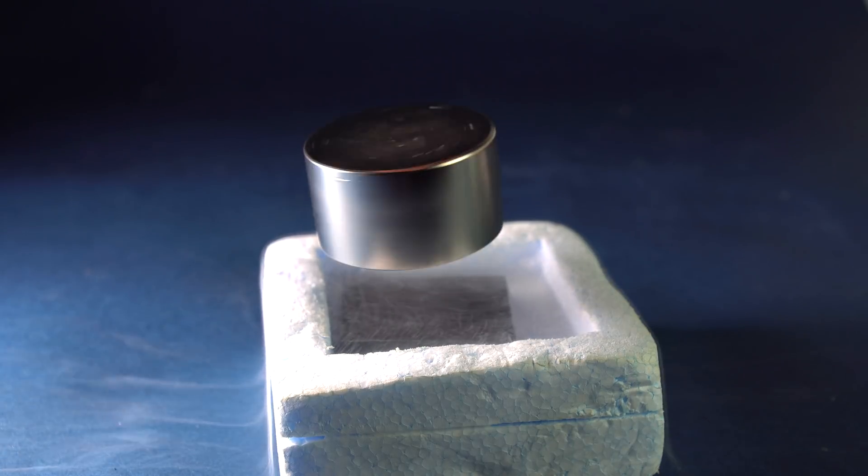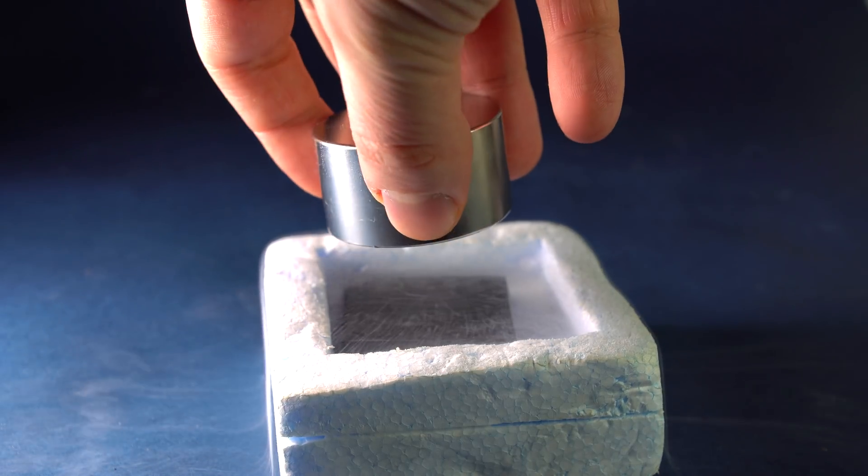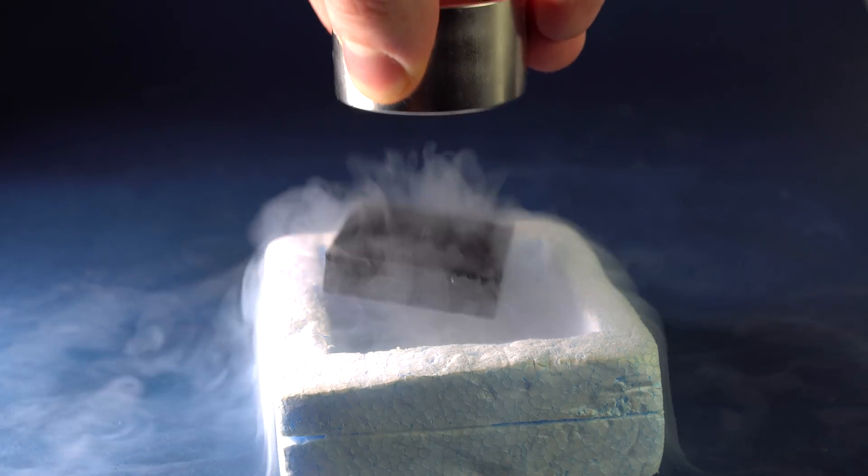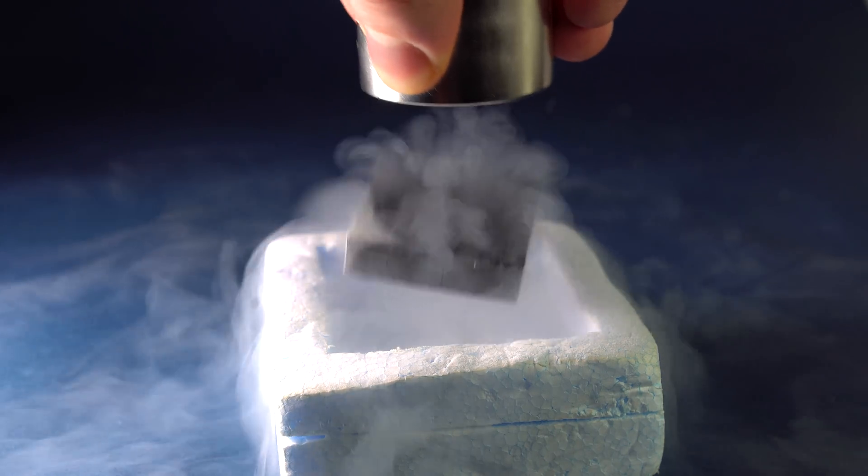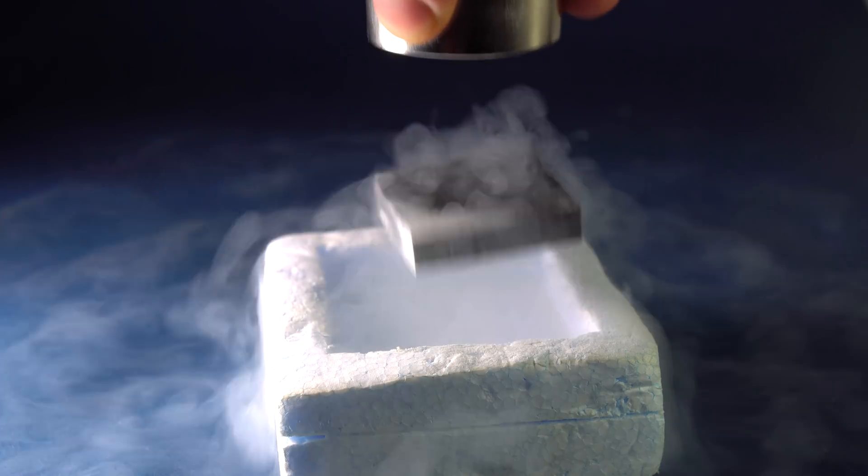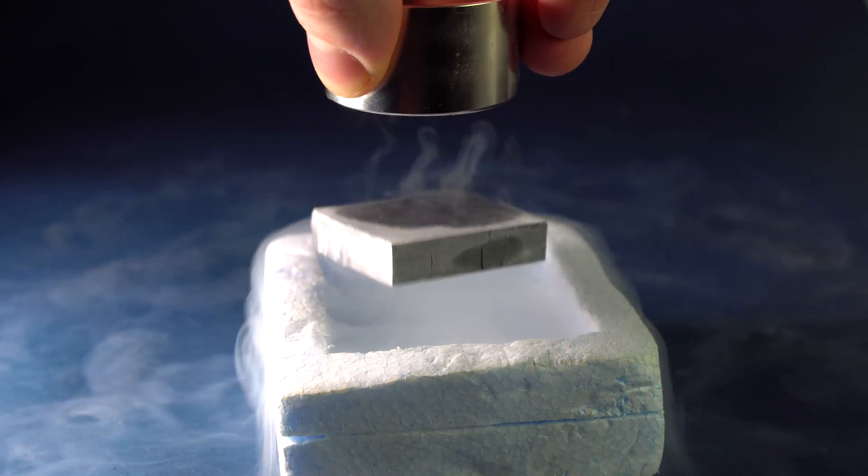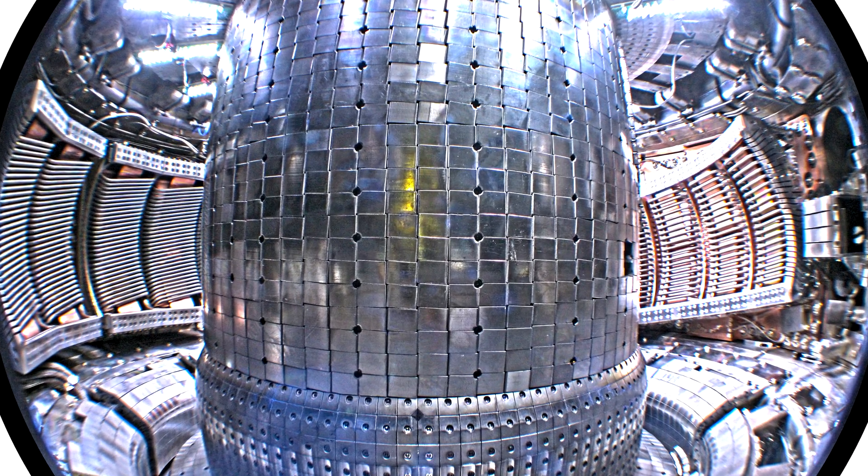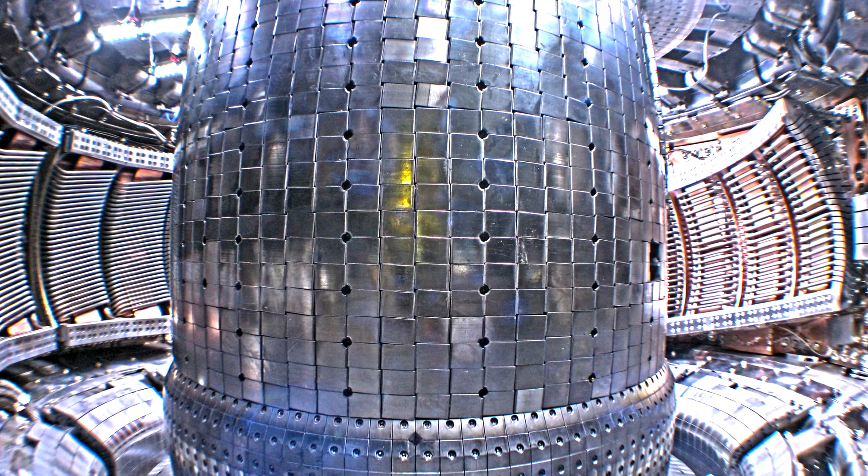Such materials become a magnet themselves when placed in close proximity to a strong magnet. For instance, such ceramics are used for making magnetic bearings and also special superconducting wires, which make up the main part of fusion reactors – tokamaks.